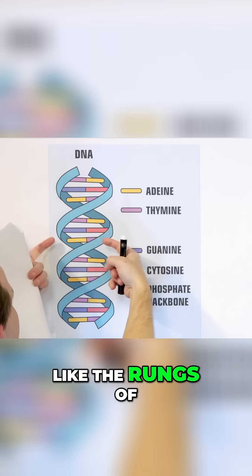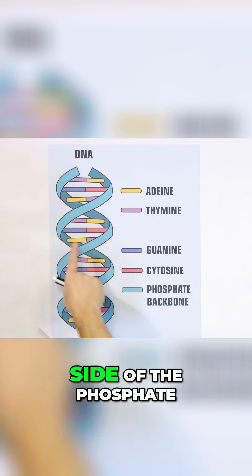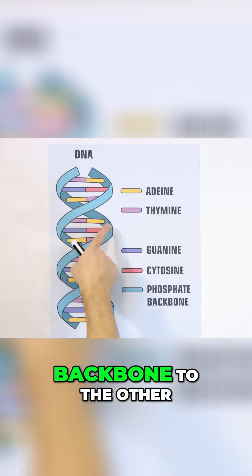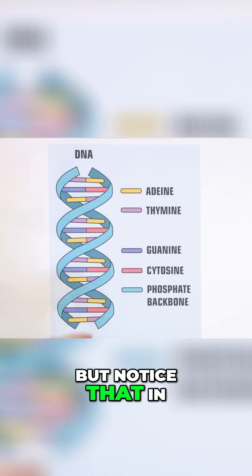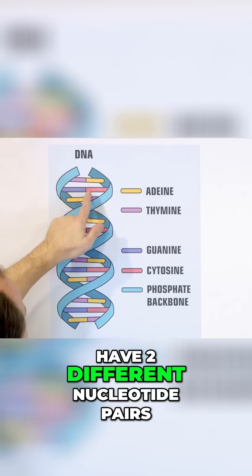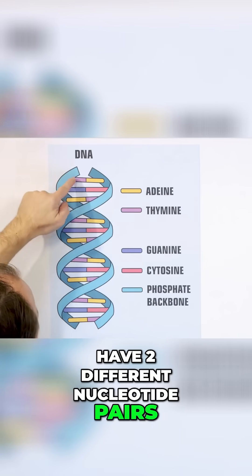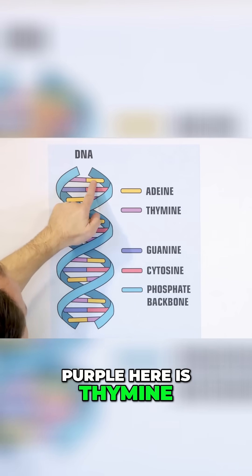They're kind of like the rungs of the ladder, connecting one side of the phosphate backbone to the other. Notice that in the middle you always have two different nucleotide pairs.